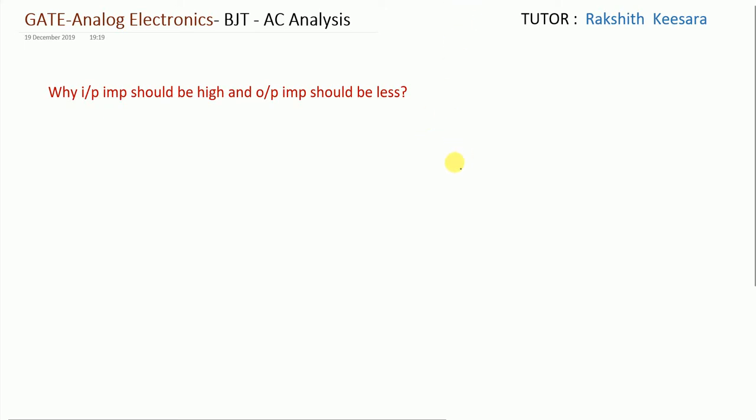In the last video, we analyzed CB amplifier, CC amplifier and CE amplifier in a shortcut manner and we found input impedance, output impedance and voltage gain. In this video, I will tell you what are the specifications of an ideal amplifier, whether these parameters should be high or low.